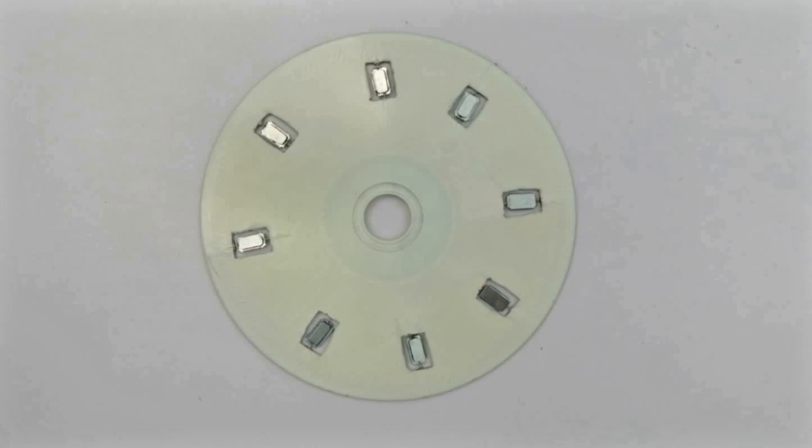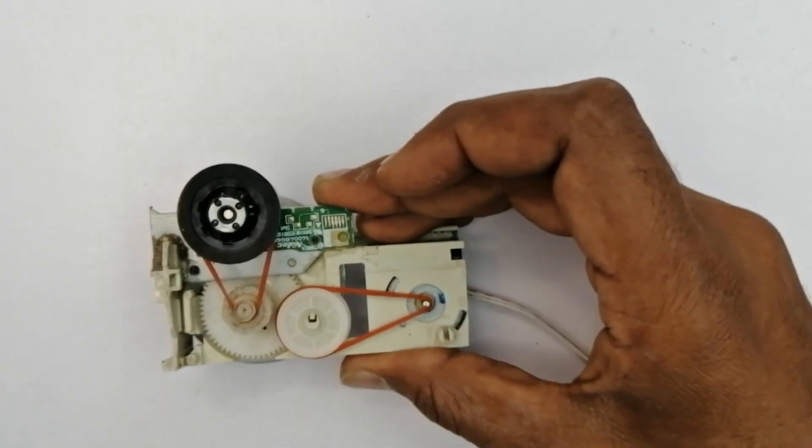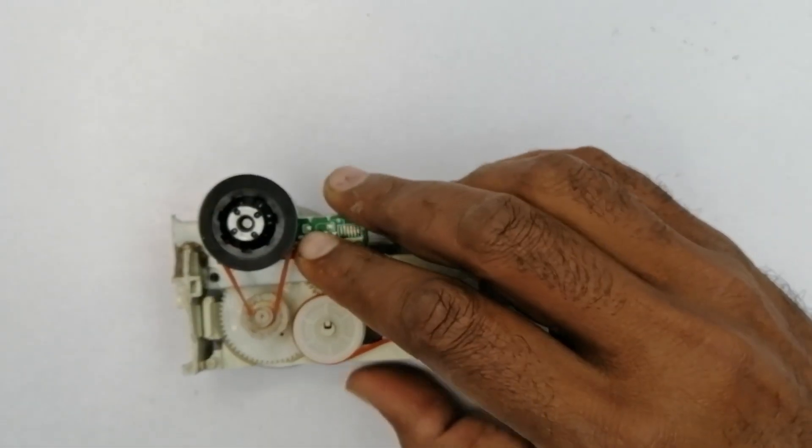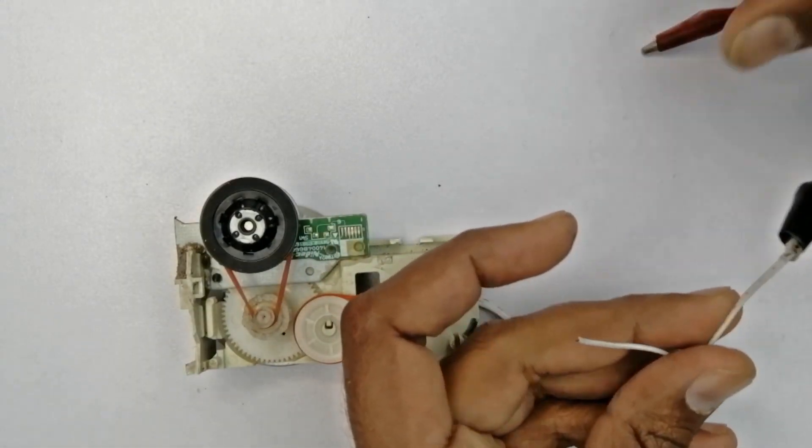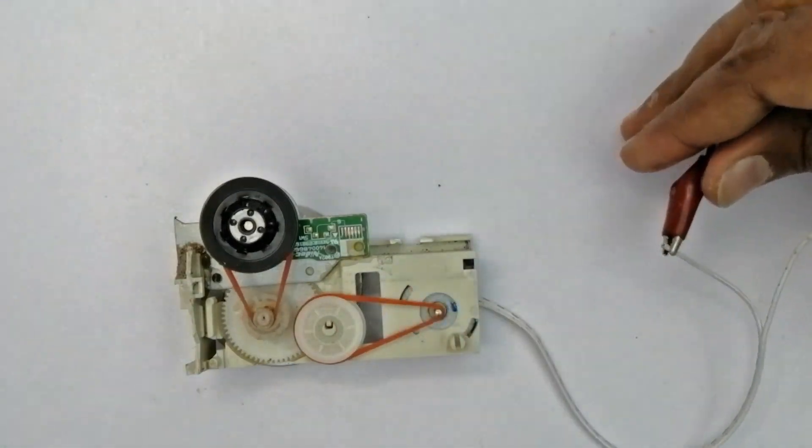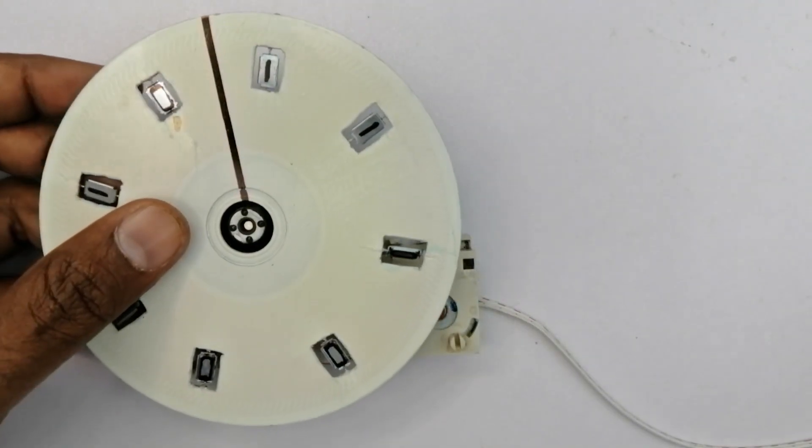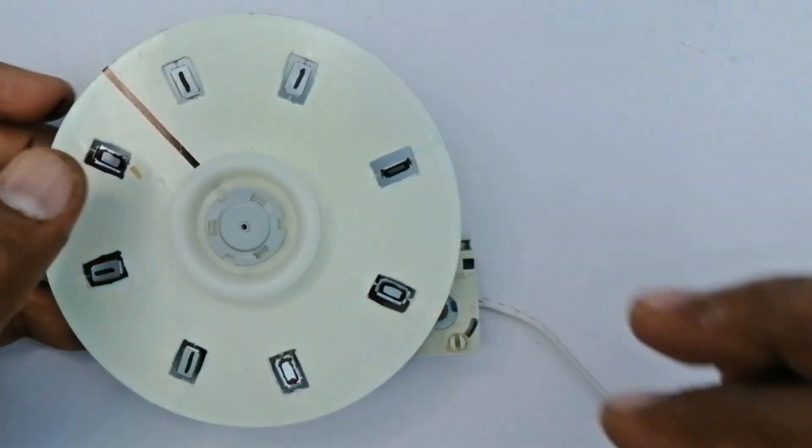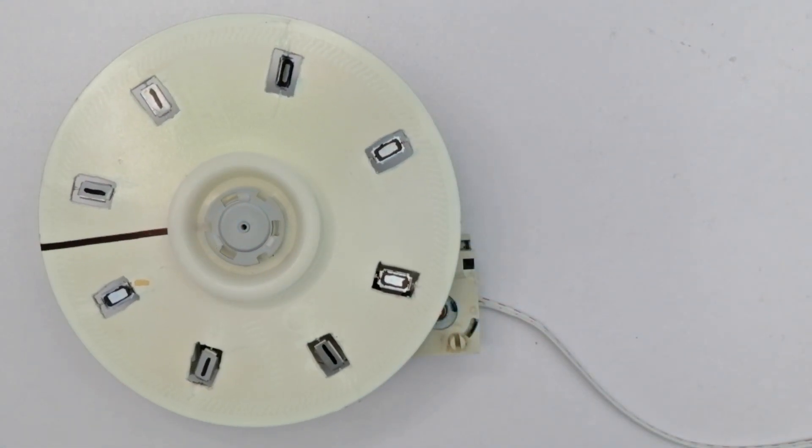We draw a line on it so that we know where to start reading or writing the data. Take a motor system so that it can rotate the disk. Attach this disk to the motor so that it can rotate. Now our disk has started rotating.